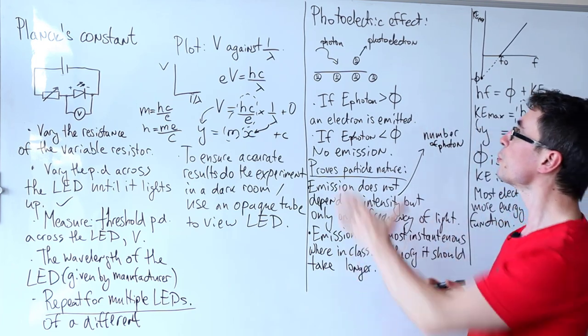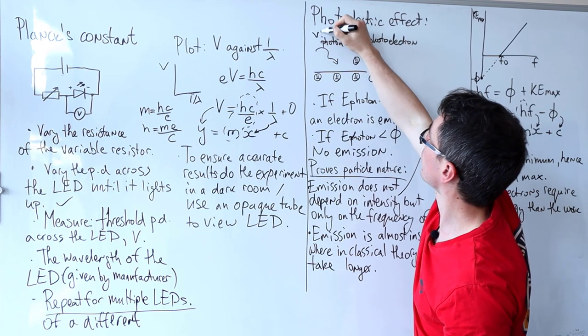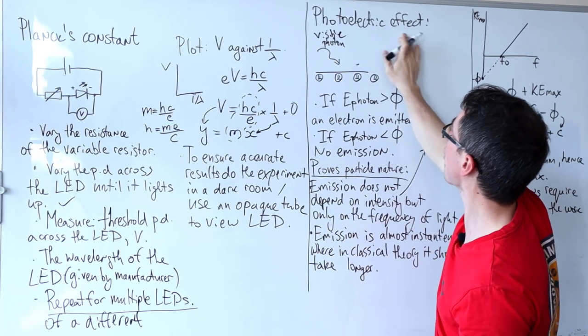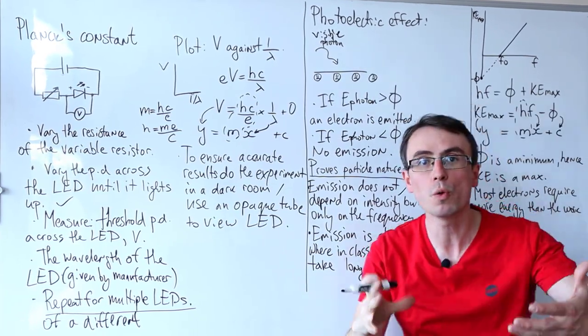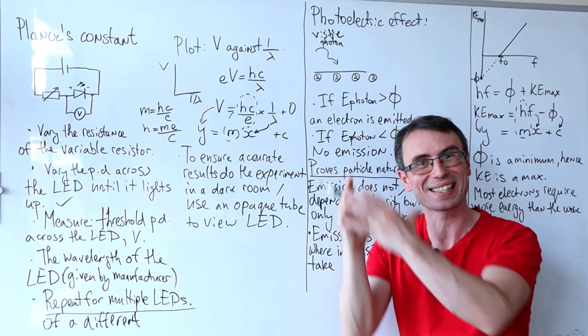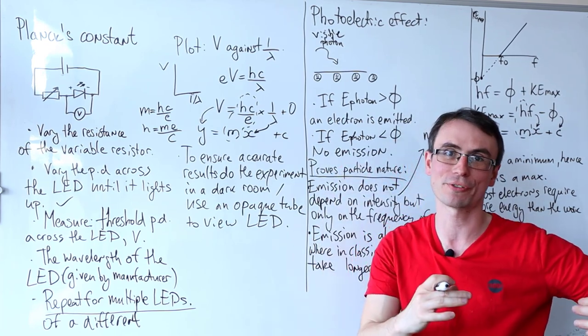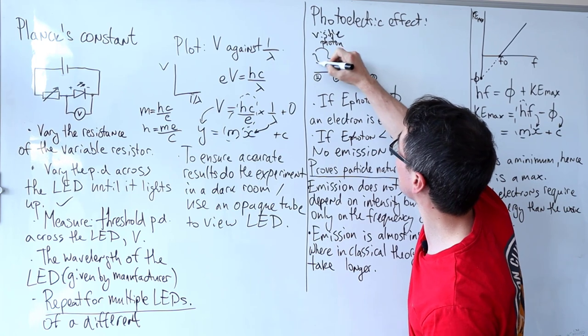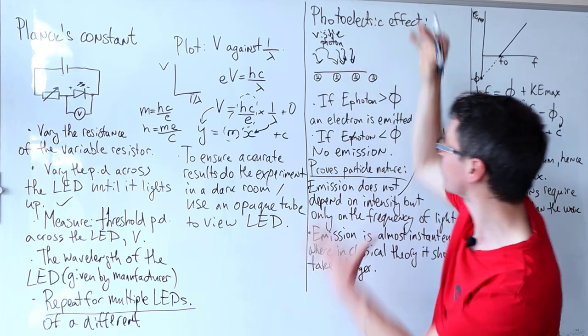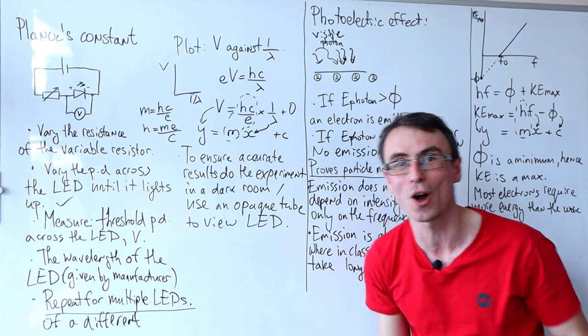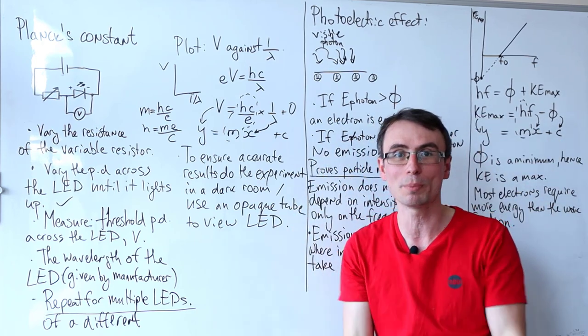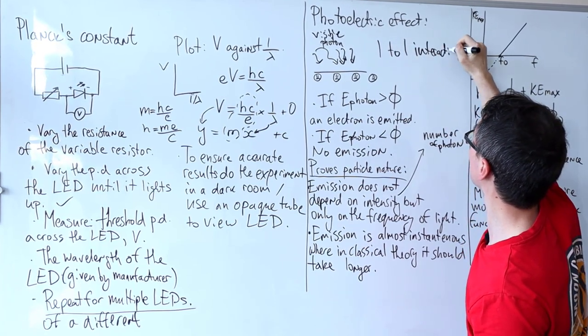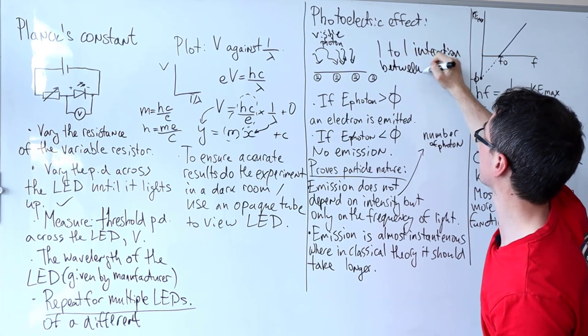But if we were to use visible light, then let's just say that this here was a visible photon, then absolutely no photoelectrons would be emitted from the surface of the metal because the energy of the visible light is below the work function. Because it does not depend on intensity, it doesn't really matter whether we had one or a thousand of these visible light photons. Still no electron will be emitted because there is a one-to-one interaction between a photon and an electron.